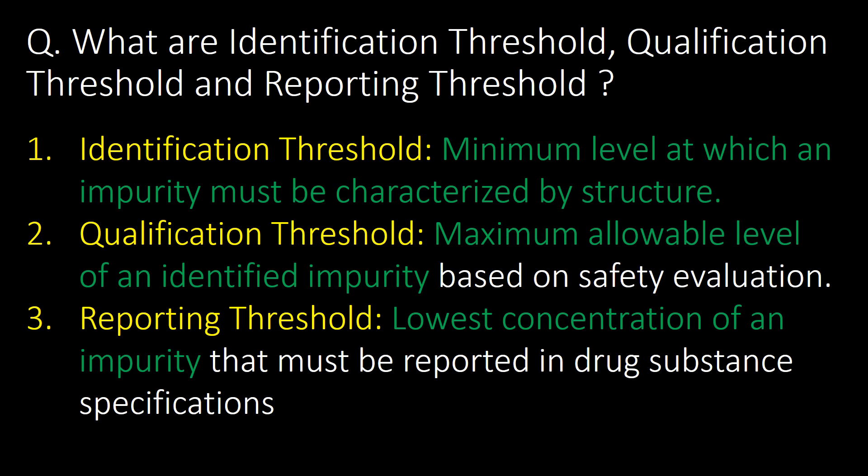What are identification thresholds, qualification thresholds, and reporting thresholds? First, identification threshold: it is the minimum level at which an impurity must be characterized by structure. Second, qualification threshold: it is the maximum allowable level of an identified impurity based on safety evaluation. Third, reporting threshold: this is the lowest concentration of an impurity that must be reported in drug substance specifications.